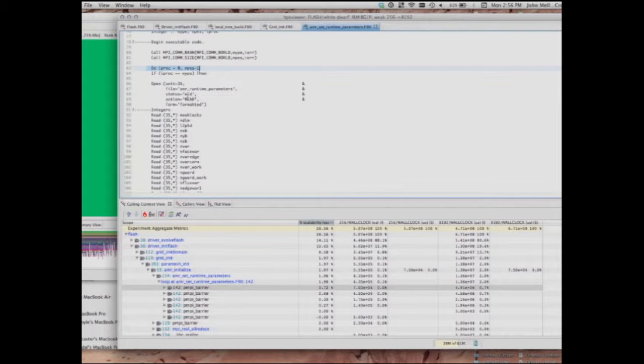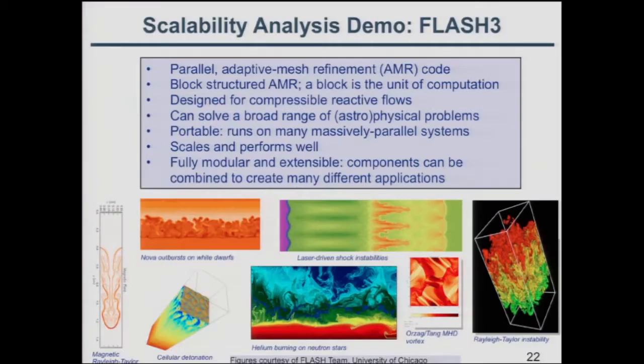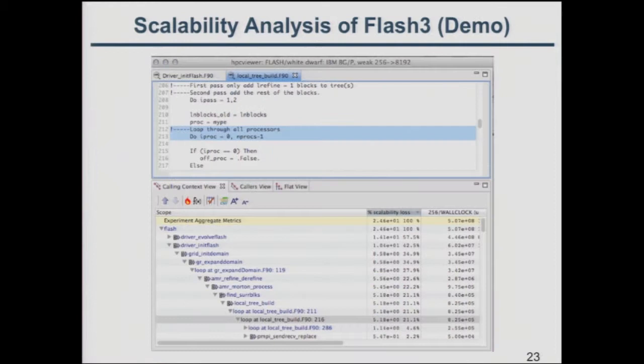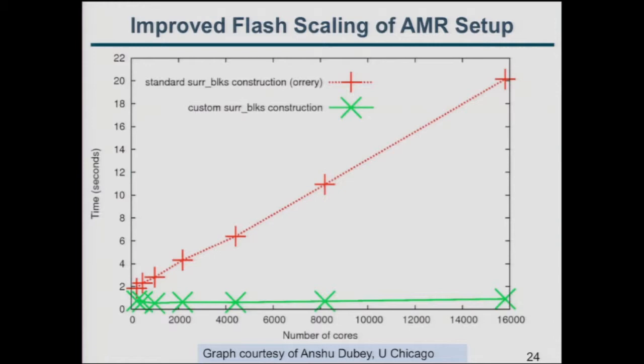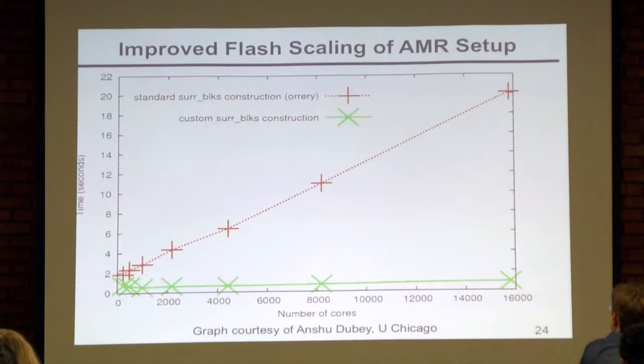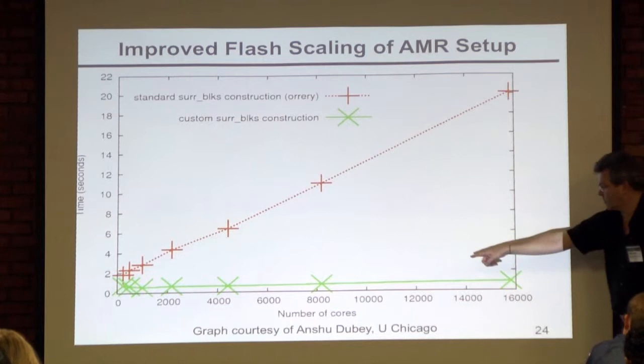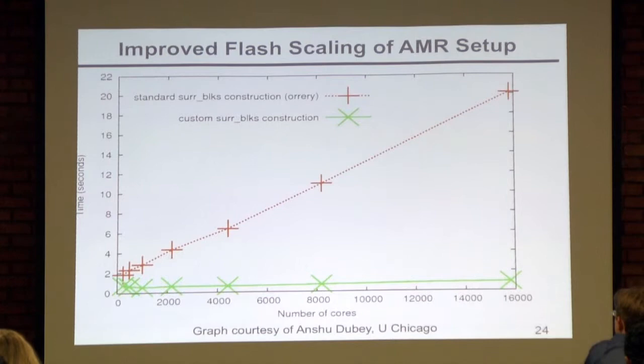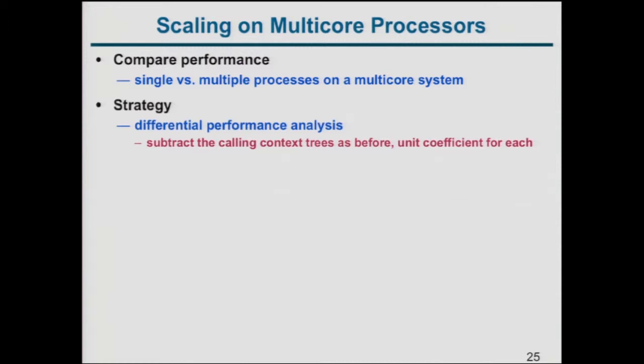Given this information, the Flash team fixed their block construction: execution time used to increase with processor count, and after the fix it was flat. That's scaling. You can also do within-node scaling analysis — comparing a four-core run to a 16-core run to find if there's insufficient bandwidth to main memory, or comparing different numbers of hardware threads per core using simultaneous multi-threading.